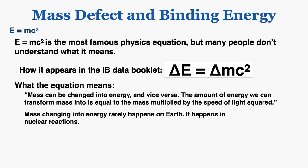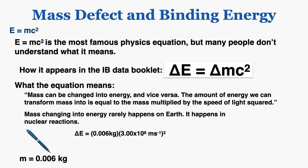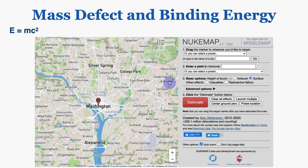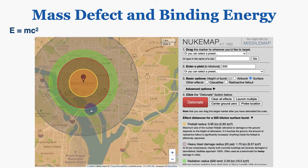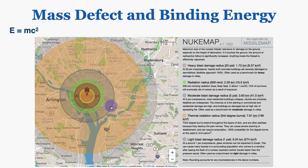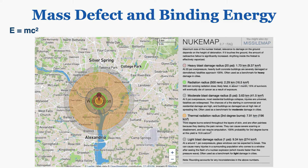E equals mc squared implies that a huge amount of energy is contained in even a little mass. For example, a pen has a mass of 0.006 kilograms. If we convert all of that mass into energy using E equals mc squared, where c is 3.00 times 10 to the 8th meters per second, we get about 5.4 times 10 to the 14th joules — equal to about 500 kilotons of TNT. On the NukeMap website, dropping 500 kilotons of TNT on Washington DC basically destroys the entire city. This is also the basis of how nuclear bombs work.